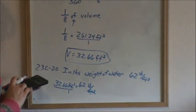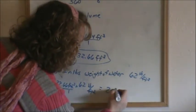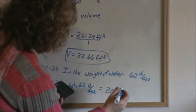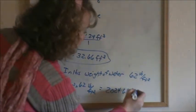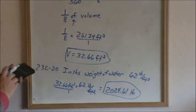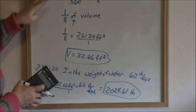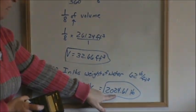So taking the 32.66 and multiplying it by 62 is 2,024.61. It's okay if you're off by rounding pounds. So the water in that can or whatever this cylinder thing is for only a 45 degree section would weigh this amount.